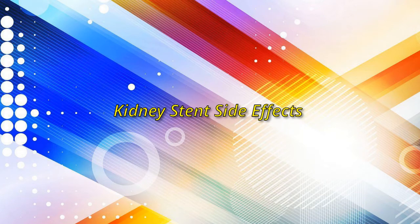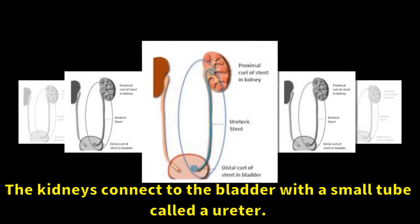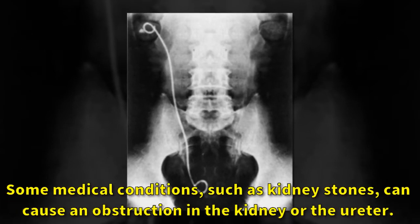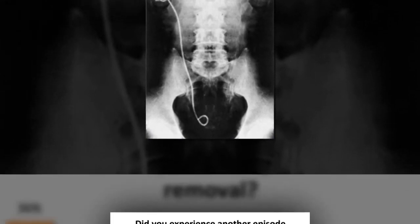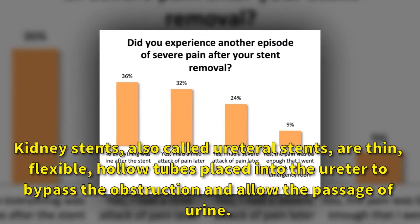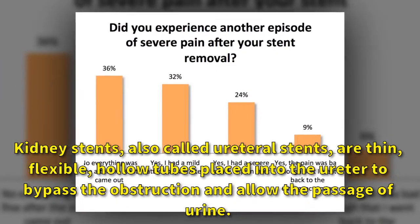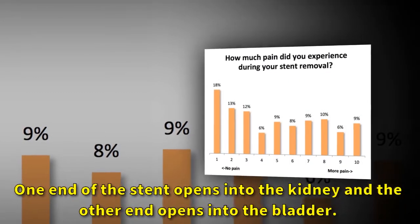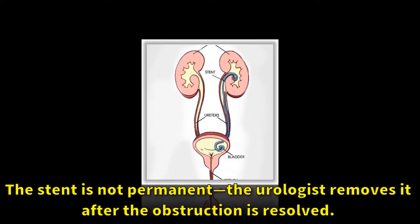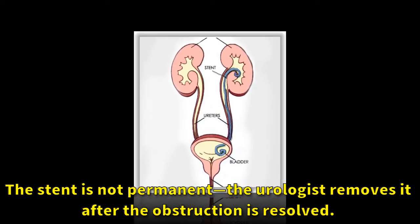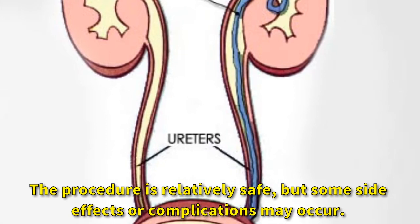Kidney stent side effects. The kidneys connect to the bladder with a small tube called a ureter. Some medical conditions such as kidney stones can cause an obstruction in the kidney or the ureter. Kidney stents, also called ureteral stents, are thin flexible hollow tubes placed into the ureter to bypass the obstruction and allow the passage of urine. One end of the stent opens into the kidney and the other end opens into the bladder. The stent is not permanent — the urologist removes it after the obstruction is resolved. The procedure is relatively safe, but some side effects or complications may occur.